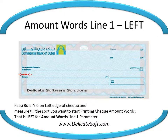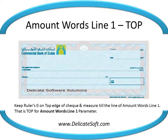Keep the ruler's zero on the top edge of the check and measure till the place you want to start printing the check amount in words for the first line — that is the left for amount words line 1 parameter. Then put the ruler's zero on the top edge and measure till the line of amount words line 1 — that is the top for amount words line 1 parameter.